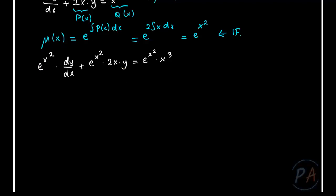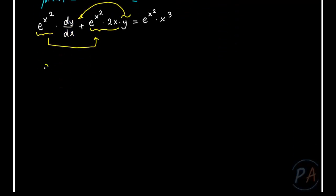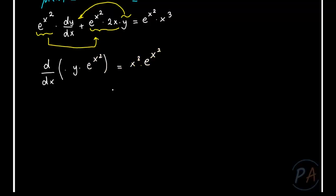Let's check the left-hand side of the equation. We see that exponential x squared is a factor and its derivative is also present — exponential x squared times 2x is the derivative of exponential x squared, and dy/dx is the derivative of y. So the left-hand side can be written as d/dx of y times exponential x squared.